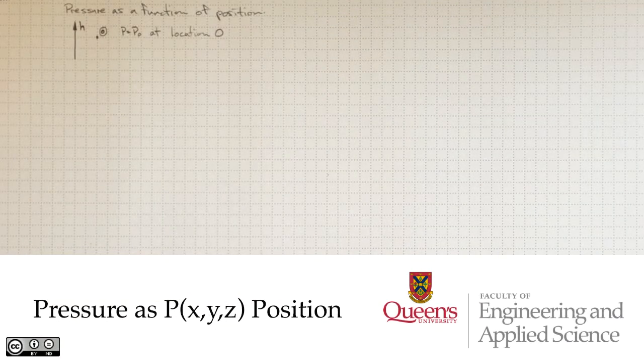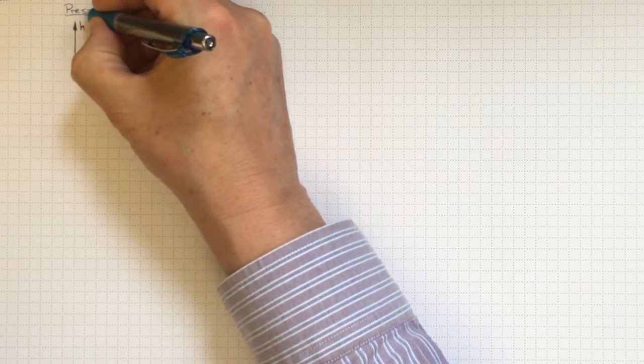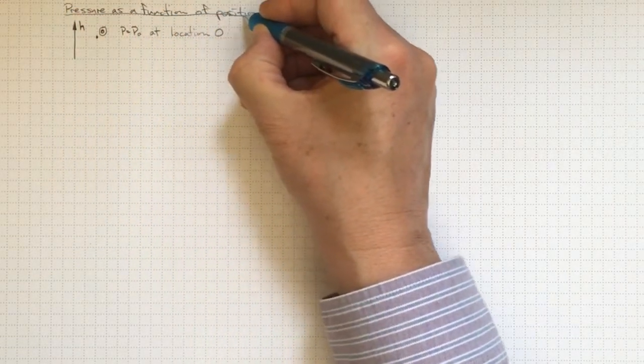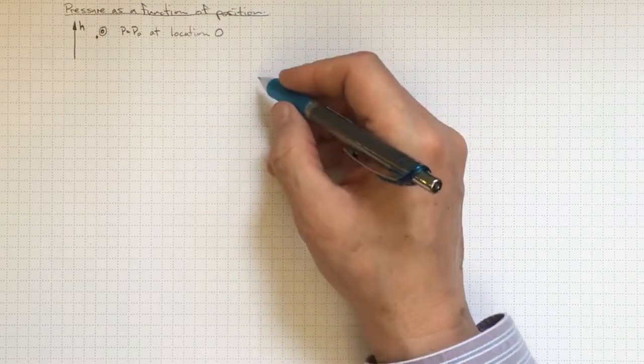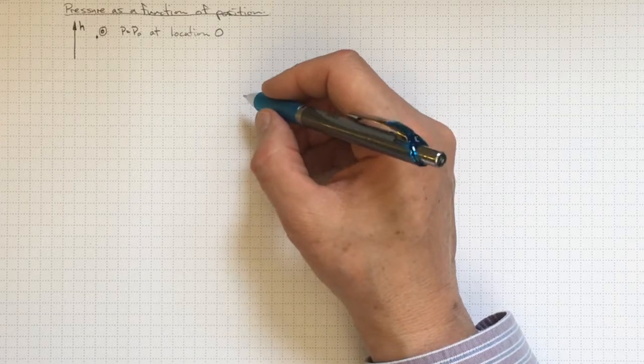Sometimes we don't want to find pressure at a specific point. We want to find out what the pressure is as a function of position. If we're looking at a whole surface, for example, we'd like to know what the pressure is everywhere on that surface as a function of position on that surface.